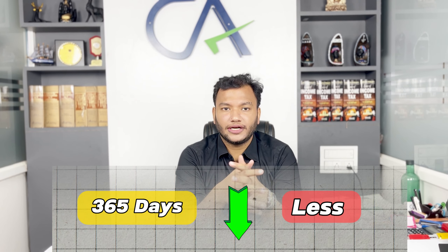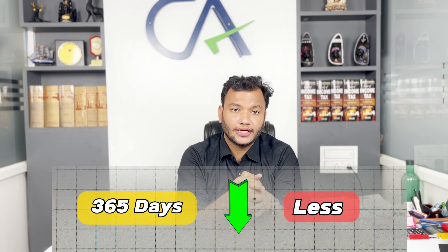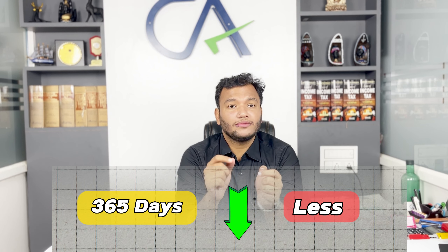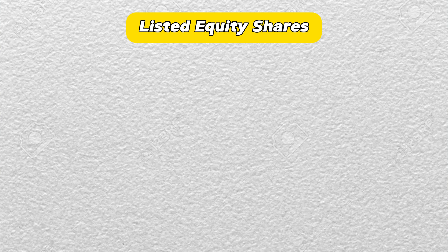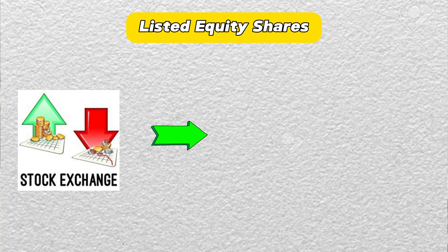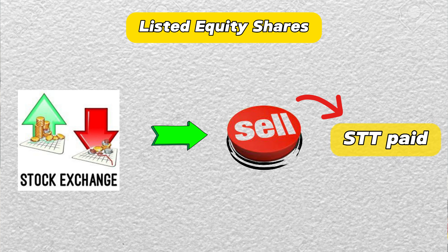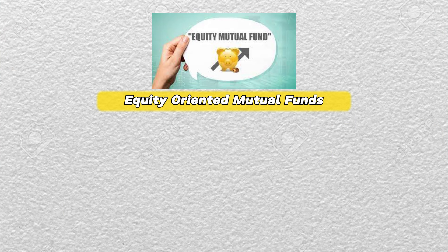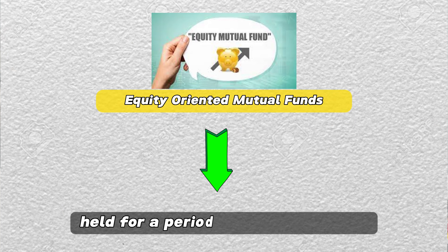As I told you in the last video, short term assets are classified in the stock market which are held for less than 365 days. Here we are talking about asset classes which are listed equity shares sold on stock exchange with STT paid, or equity oriented mutual funds held for less than 1 year.